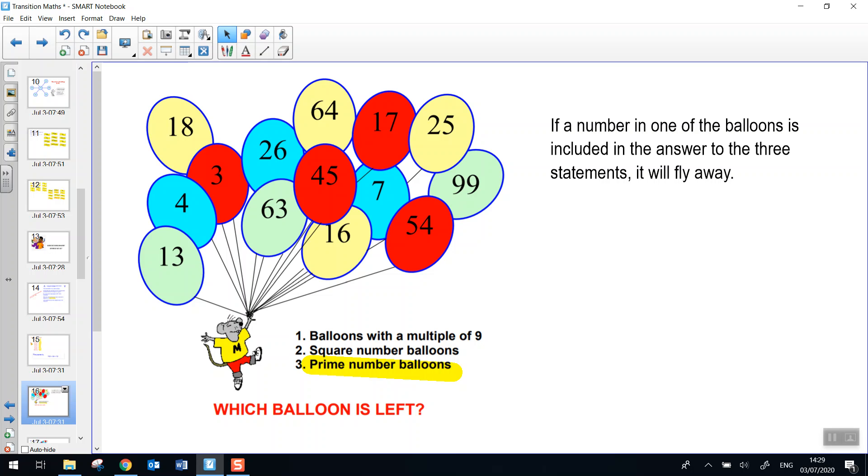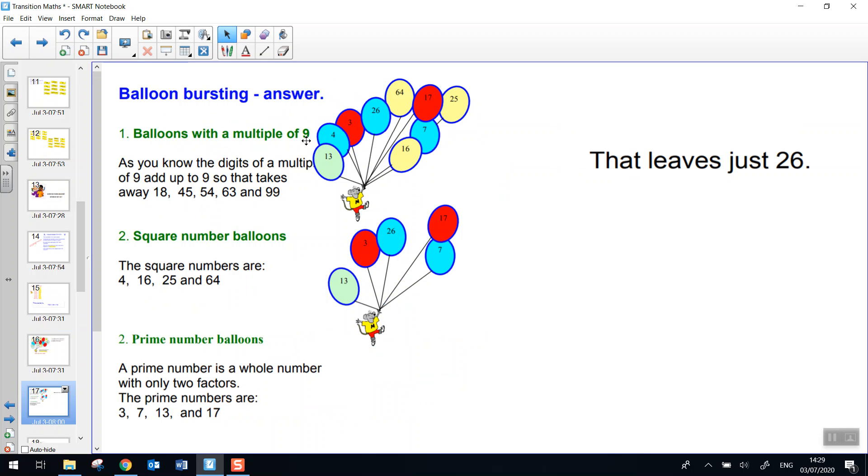Okay. Are you ready for the answer? Here we go. Okay. Balloons with a multiple of nine. And that was 18, 45, 54, 63, and 99.